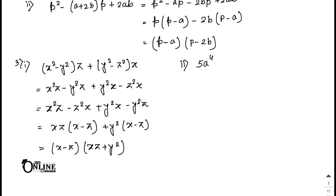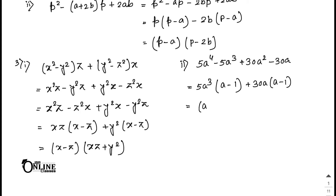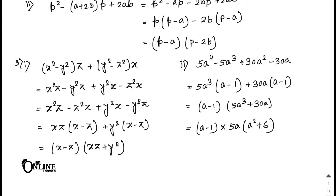Sum number 3.2: 5a⁴ minus 5a³ plus 30a² minus 30a. Take 5a³ common from the first two terms giving 5a³(a minus 1); take 30a common from the last two giving 30a(a minus 1). Then (a minus 1) is common. Further common 5a gives 5a(a minus 1)(a² plus 6) as the final answer.